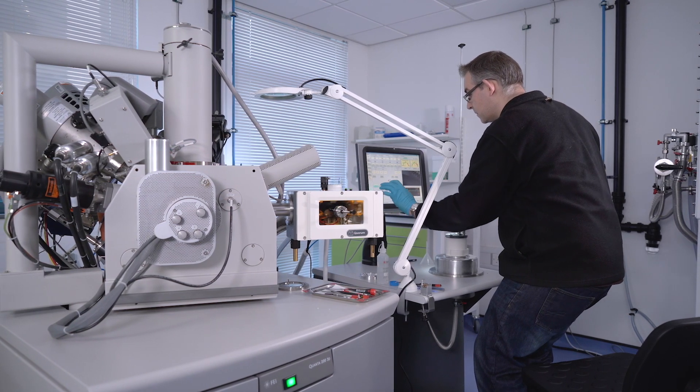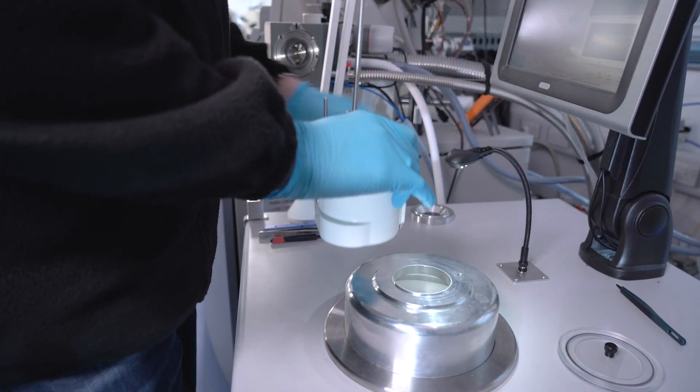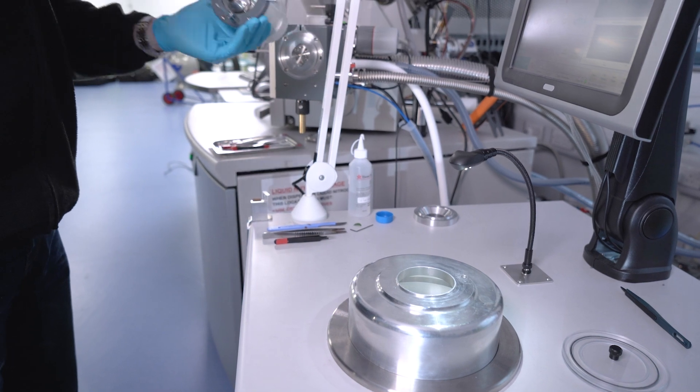Then we vent the slusher and transfer the pot over onto the preparation chamber.